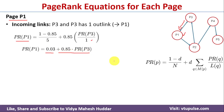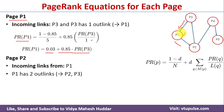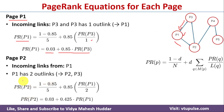Next, we find the page rank equation for P2. P2 has one incoming link — from P1 — and P1 has two outbound links (to P2 and P3). So: PageRank(P2) = 0.03 + 0.85 × [PageRank(P1) / L(P1)]. Since L(P1) = 2, this simplifies to: PageRank(P2) = 0.03 + 0.425 × PageRank(P1).